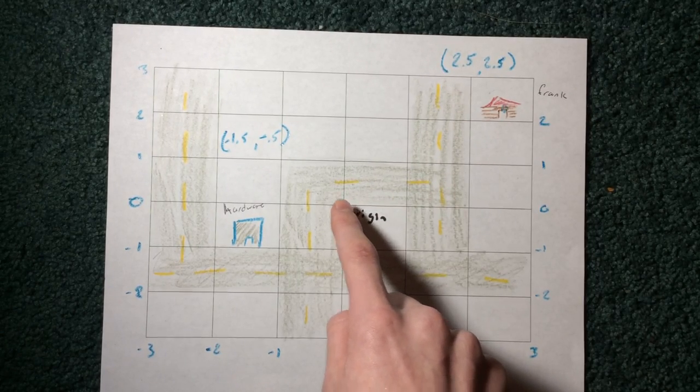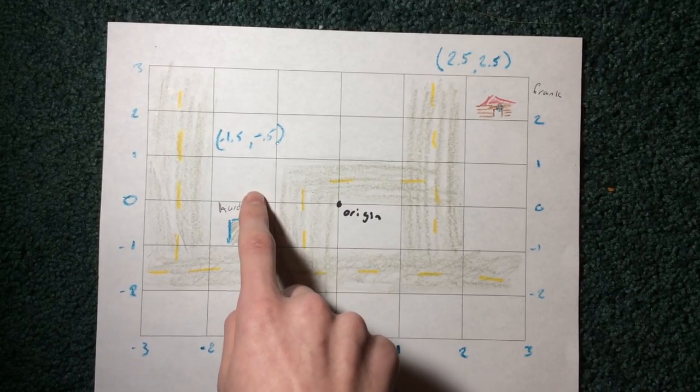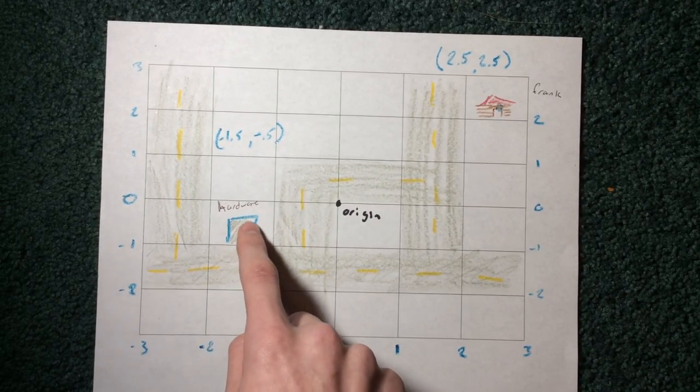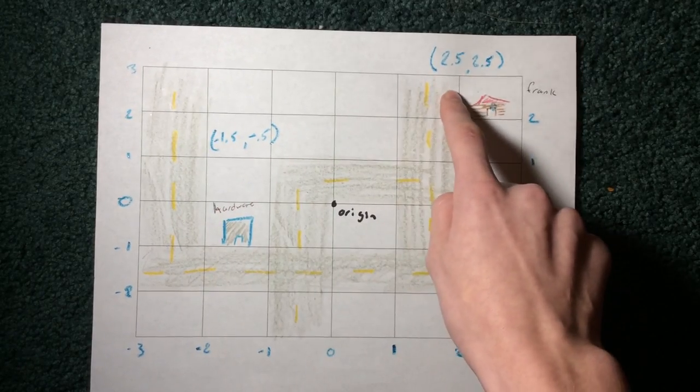Then for here we're going to go down one, down a half, so that's negative one and a half, and then down a half, so that's negative half. So then, now we have the position for the hardware store and for Frank's house.